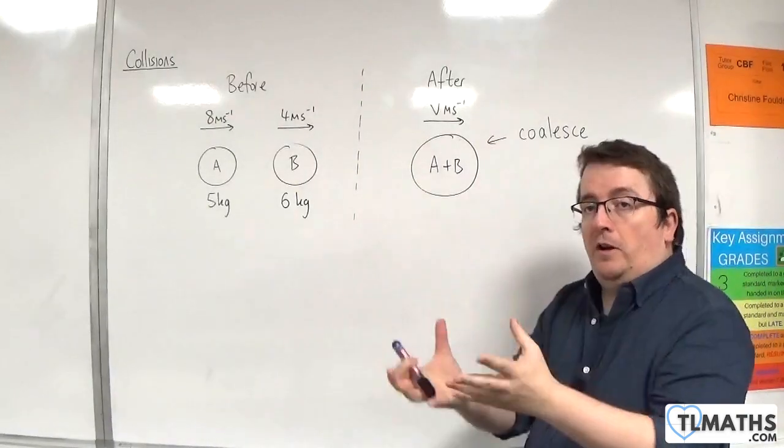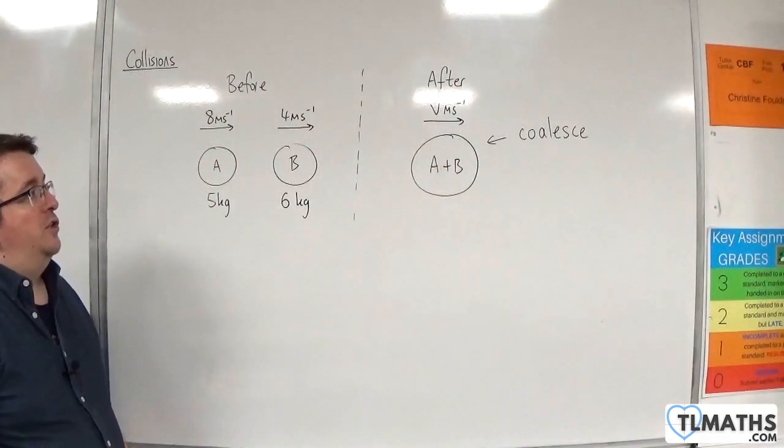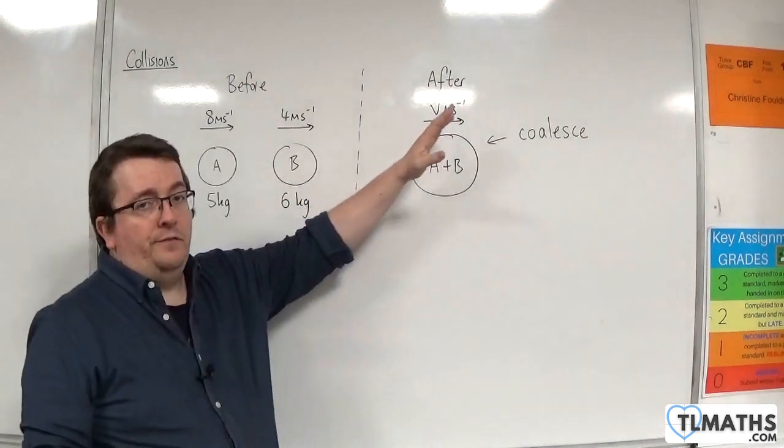And the coalesce particle, so the joint particle, is travelling at V metres per second to the right. So, what we need to do is find V.